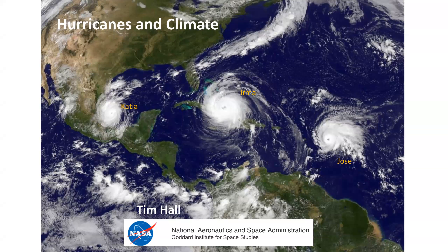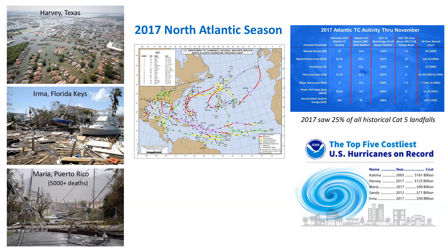Sorry about that glitch, everyone. My talk is on hurricanes and climate. This first slide is a picture of three storms spinning simultaneously — it's a rare event from last season, 2017: Katya, Irma, and Jose. As the 2018 season is just about upon us — in fact, we've already had one named storm that hit the Florida Panhandle.